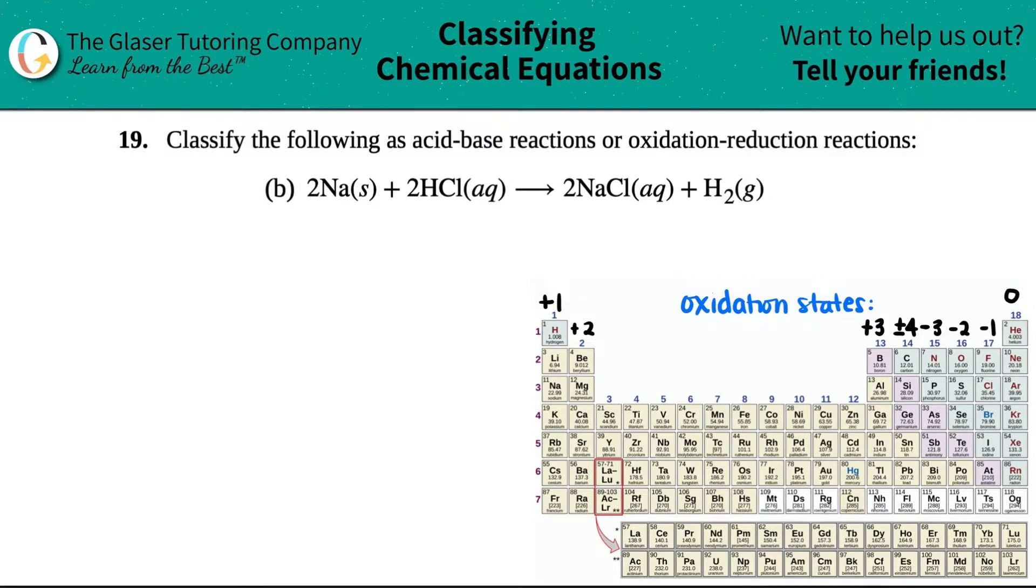Number 19, classify the following as either an acid-base reaction or oxidation-reduction reactions, and then we have letter B. So we need to figure out if this whole equation is falling under the category of an acid-base reaction or is it an oxidation-reduction reaction.